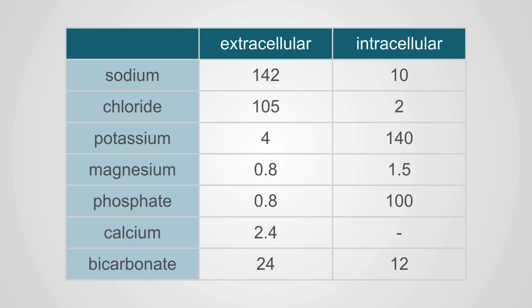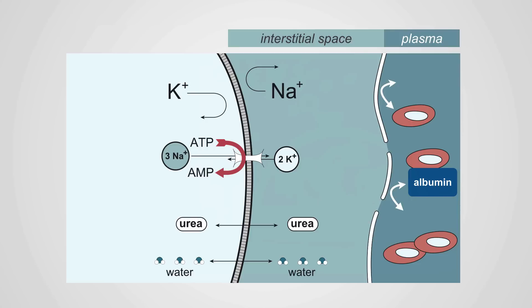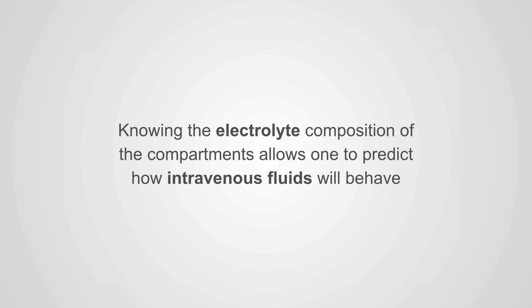Looking at this in a tabular format, you see that the extracellular sodium concentration is 142 versus 10 millimoles per liter in the intracellular compartment. Potassium, very low in the extracellular compartment at 4 compared to the intracellular compartment at 140. The interstitial space and the plasma space are almost identical. The only difference between these two spaces is that there's a lower concentration of albumin and other large molecules because they cannot pass through the capillary wall. Knowing the electrolyte composition of the compartments allows one to predict how intravenous fluids will behave.